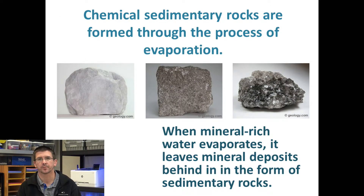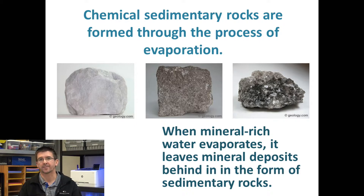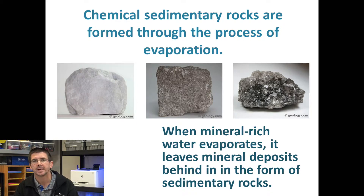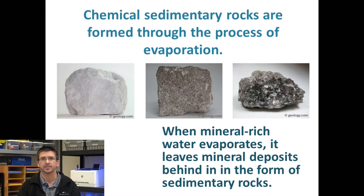Chemical sedimentary rocks are formed through the process of evaporation. The most common example of chemical sedimentation is limestone. Limestone can form in caverns where you have chemicals suspended in a solution of water. As that water drips from a cave, it hits the ground, the water evaporates out, leaving the mineral deposits behind. We see limestone caverns with stalagmites and stalactites — those are formed by that process of chemical sedimentation.